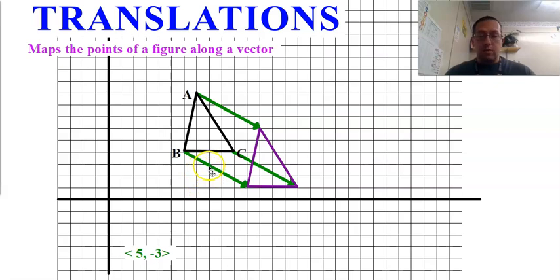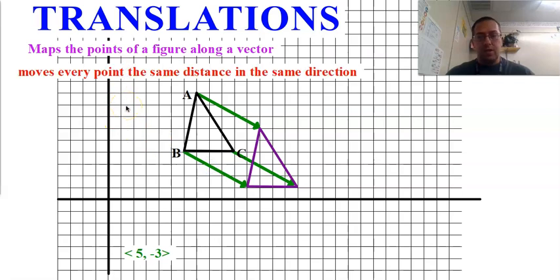All right? And one thing I do want to point out, notice that each of these points moves to the same vector. All right? Not just the vertices, but even the points in between the vertices all move according to this vector. They all move the same distance in the same direction. All right? So that's the same thing that I have here in purple. It moves every point the same distance in the same direction. All right? Translations.